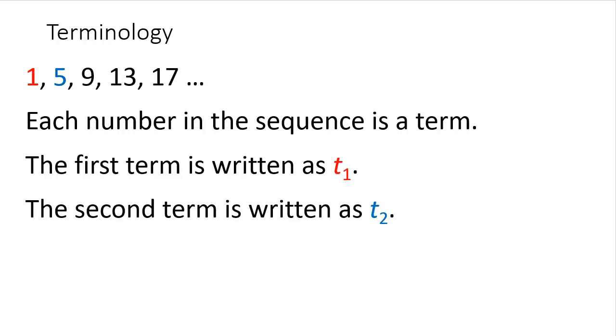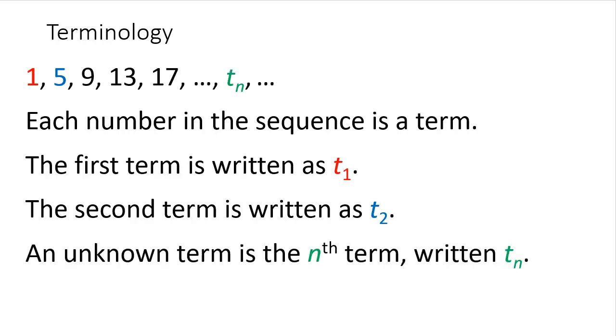t₂ is the second term. And an unknown one along is written as t_n for the nth term. For historical reasons, the first term is also called a, because they used to be labelled abc.